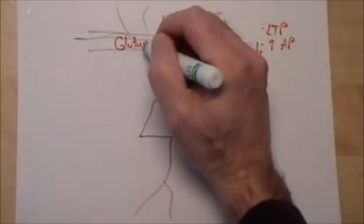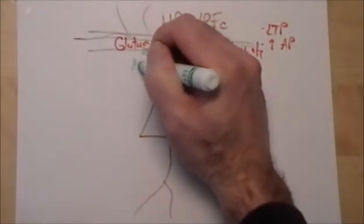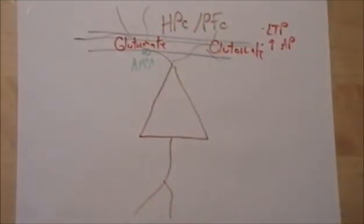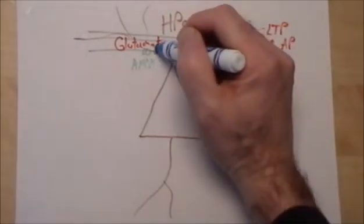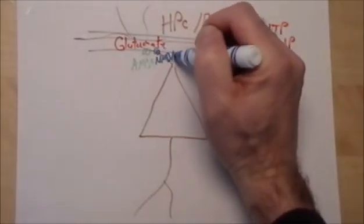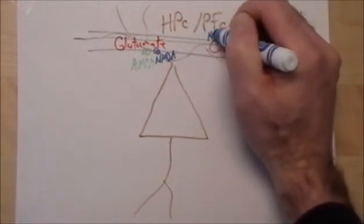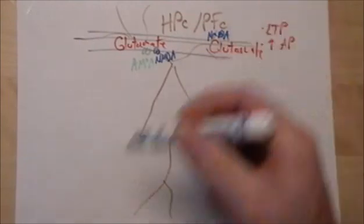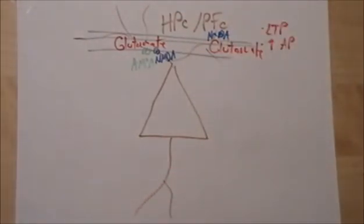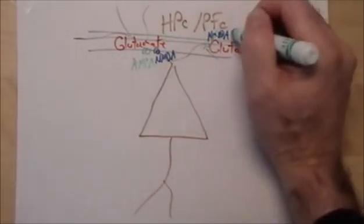When glutamate is dropped off, it binds to both AMPA and NMDA receptors. Typically these are co-localized. I'm going to draw them really close together on these post-synaptic spines.